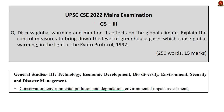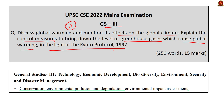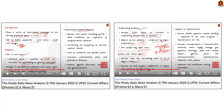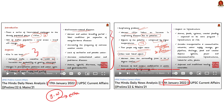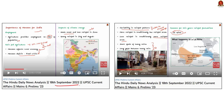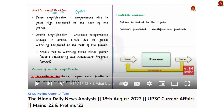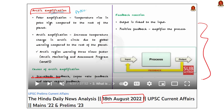Question number 17 in GS Paper 3: 'Discuss global warming and mention its effects on global climate. Explain the control measures to bring down the levels of greenhouse gases which cause global warming in the light of the Kyoto Protocol 1997.' For the first part, refer to our 17th January 2022 Hindu News Analysis, which covered the impacts of global warming in a 360-degree perspective. In our 18th September Hindu News Analysis, we covered the impacts of global warming on Indian monsoon. In our 18th August 2022 Hindu News Analysis, we covered Arctic amplification due to global warming.